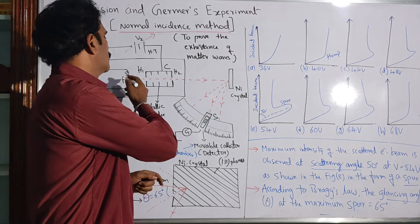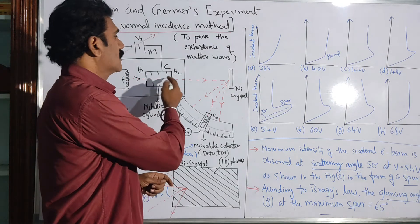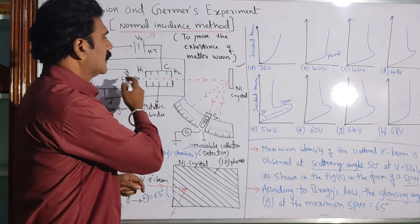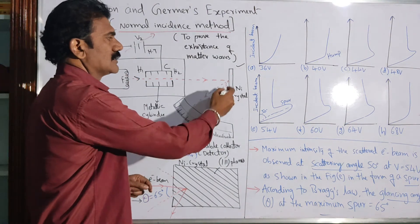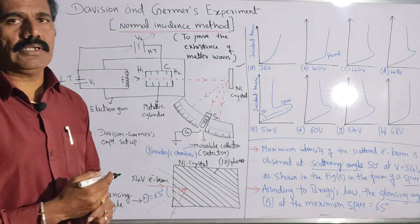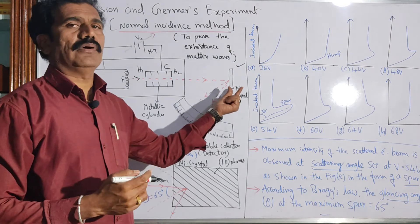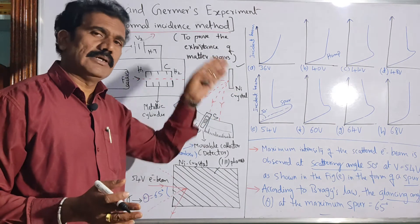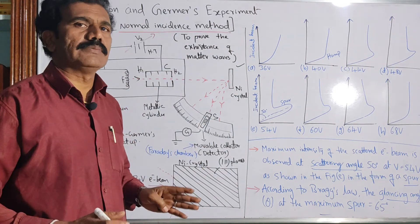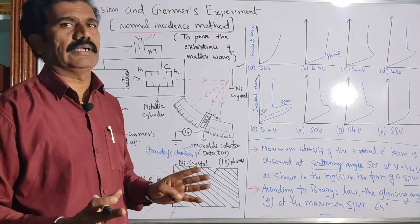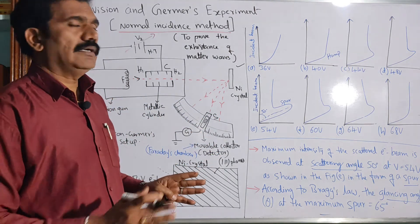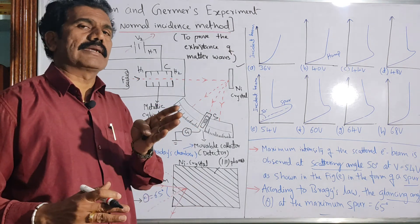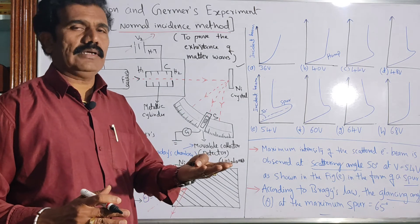Such high kinetic energy electrons are allowed to fall on a nickel crystal on the other side. This incident electron beam is allowed to fall on the surface of a nickel crystal. The nickel crystal is used as a sample here for scattering of the electron beam, because it consists of a number of atoms in a particular fashion — it is basically a crystal. The systematic arrangement of atoms is expected in any crystal. There are also some crystal planes in any crystal.